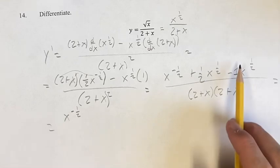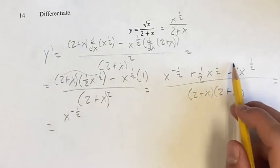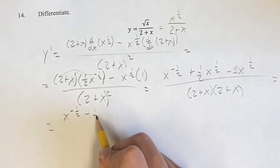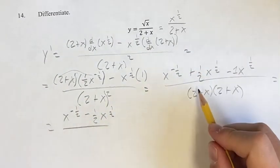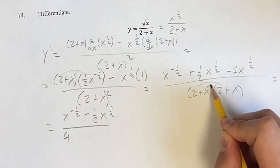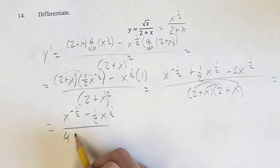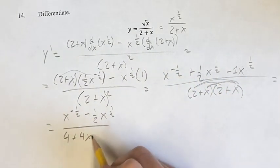Like terms, we can add them, or in this case, subtract them. 1 half minus 1 is negative 1 half, and then your term x to the 1 half. And this is over 4 plus 2x plus another 2x is plus 4x plus x squared.